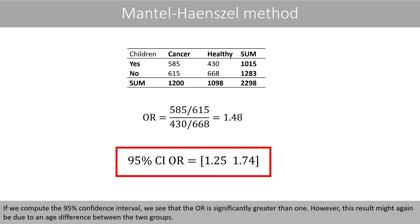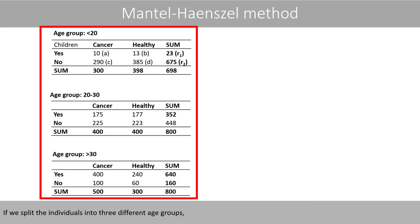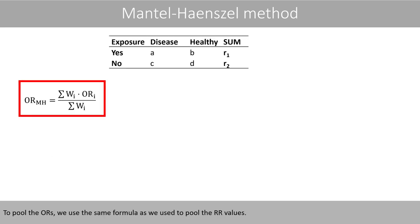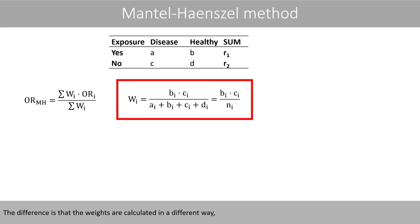However, this result might again be due to an age difference between the two groups. If we split the individuals into three different age groups and calculate the odds ratios for each group, we see that all these odds ratios are now close to 1. To pool the odds ratios, we use the same formula as we used to pool the relative risk values.